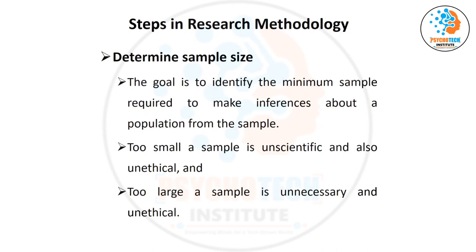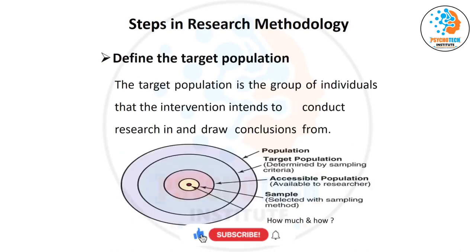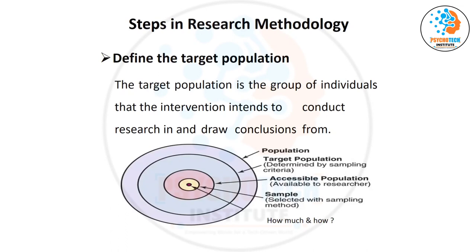If someone conducts a study on five samples and someone on 50 samples, which result is more appropriate? Without a single thought you will say the study on 50 is better. As sample size increases, we are able to reach the accessible population maximum, and if you increase further you reach the target population. If you reach the whole target population, that is the ideal study — that is the truth we want to find from the sample.